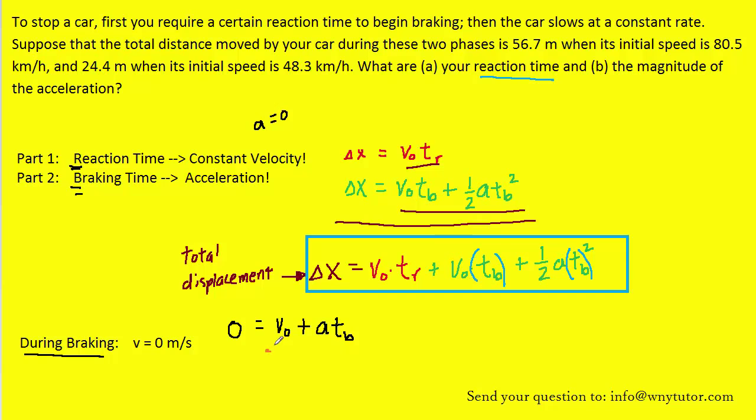We would subtract V initial from both sides of the equation and then divide both sides by the acceleration, A. Now, what's really nice about this is that we now have the braking time in terms of two things that we either know or are interested in finding. The initial velocity was given in the question. And part B of the question is asking us for acceleration, so here we have A in the formula. This is nice because it's in terms of something we either have or we want.